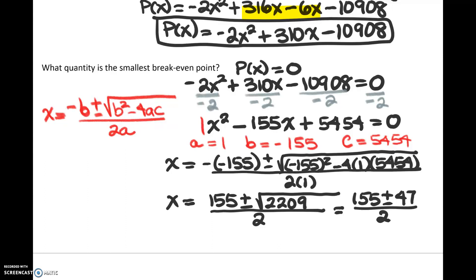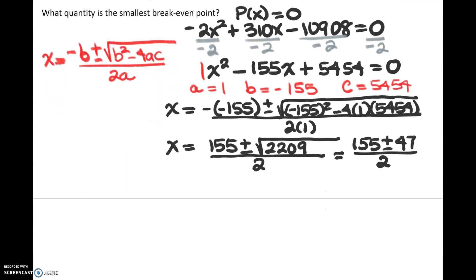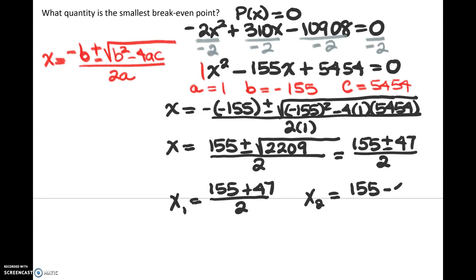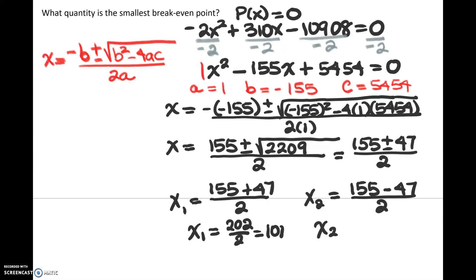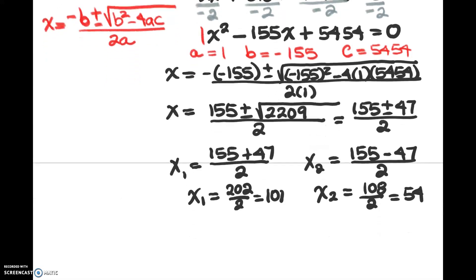So we get two answers: 155 plus 47 over 2, and 155 minus 47 over 2. For the first: 155 plus 47 equals 202, and 202 divided by 2 gives 101. For the second: 155 minus 47 equals 108, and 108 divided by 2 gives 54. Since 54 is obviously smaller than 101, 54 is the smallest breakeven point.